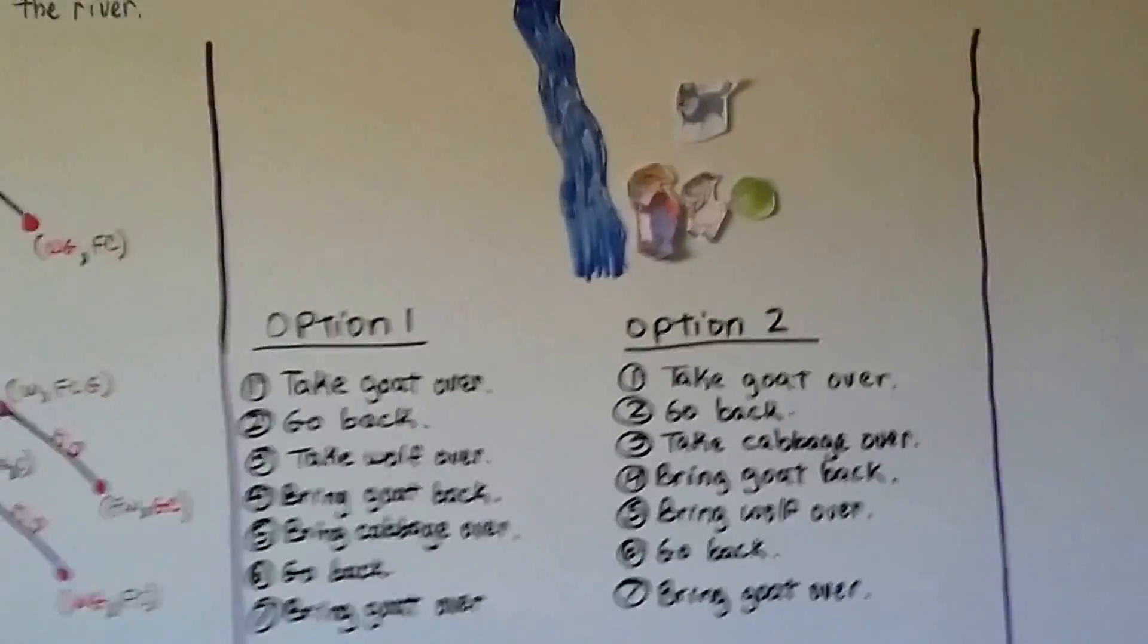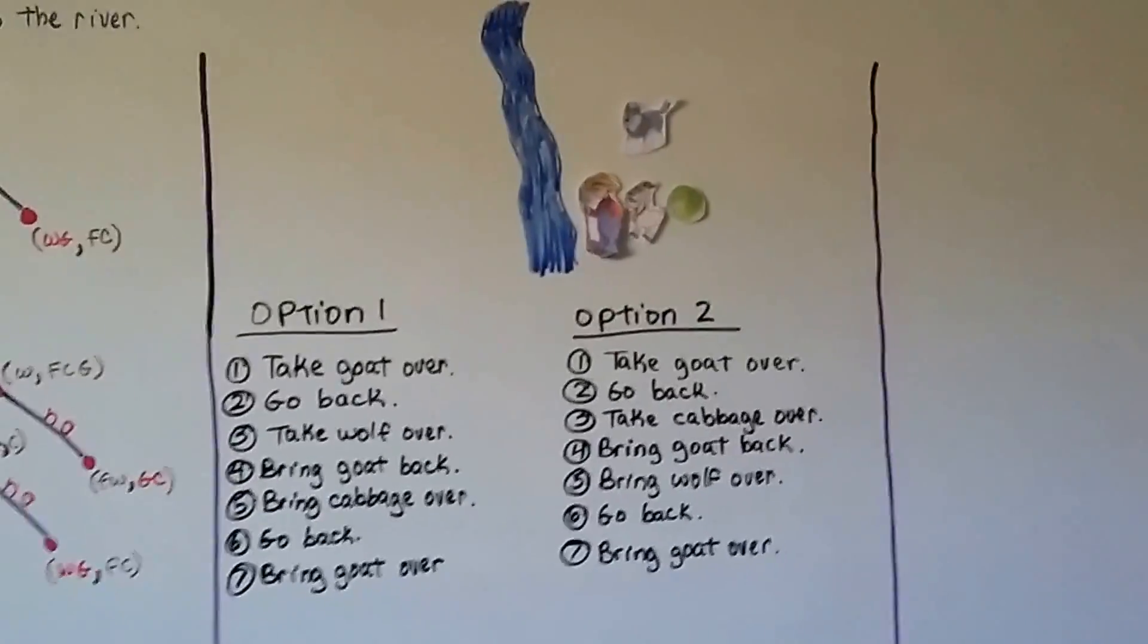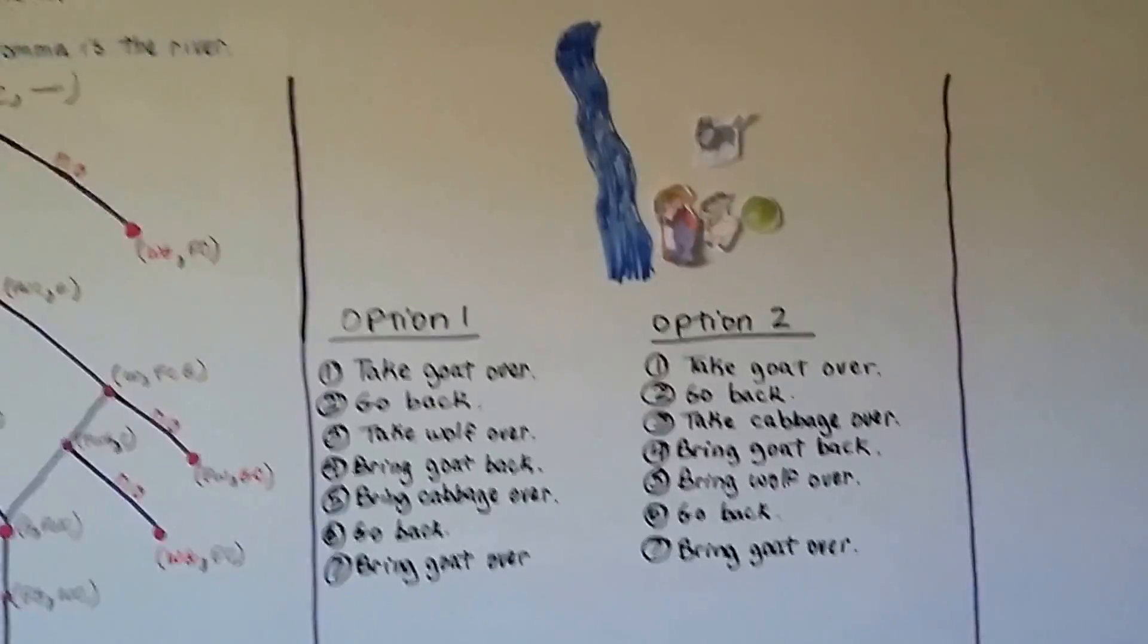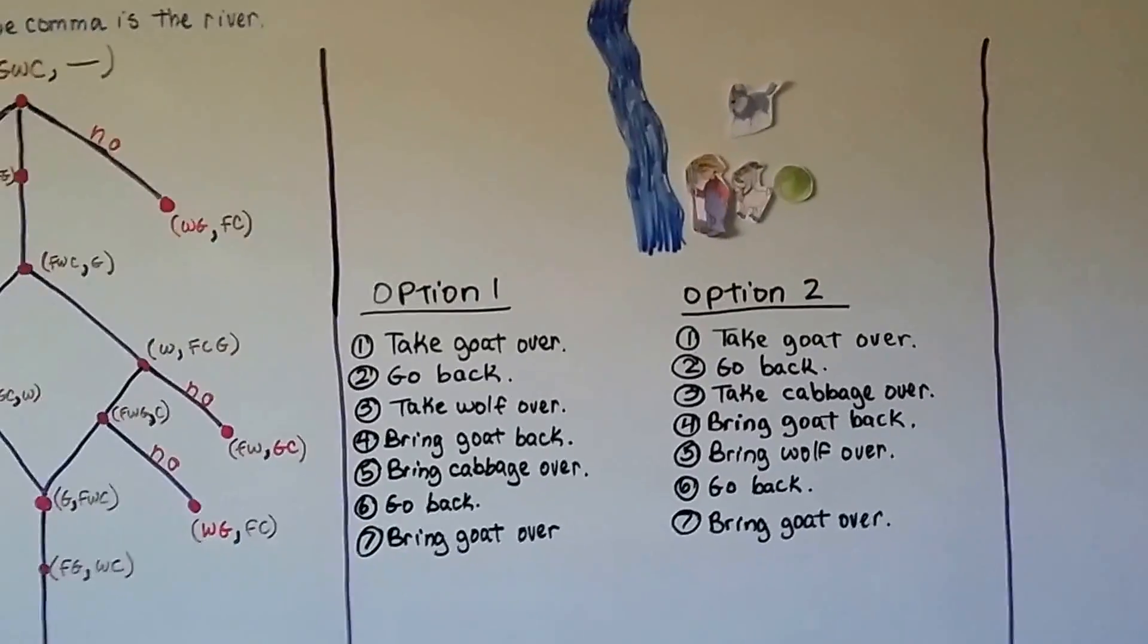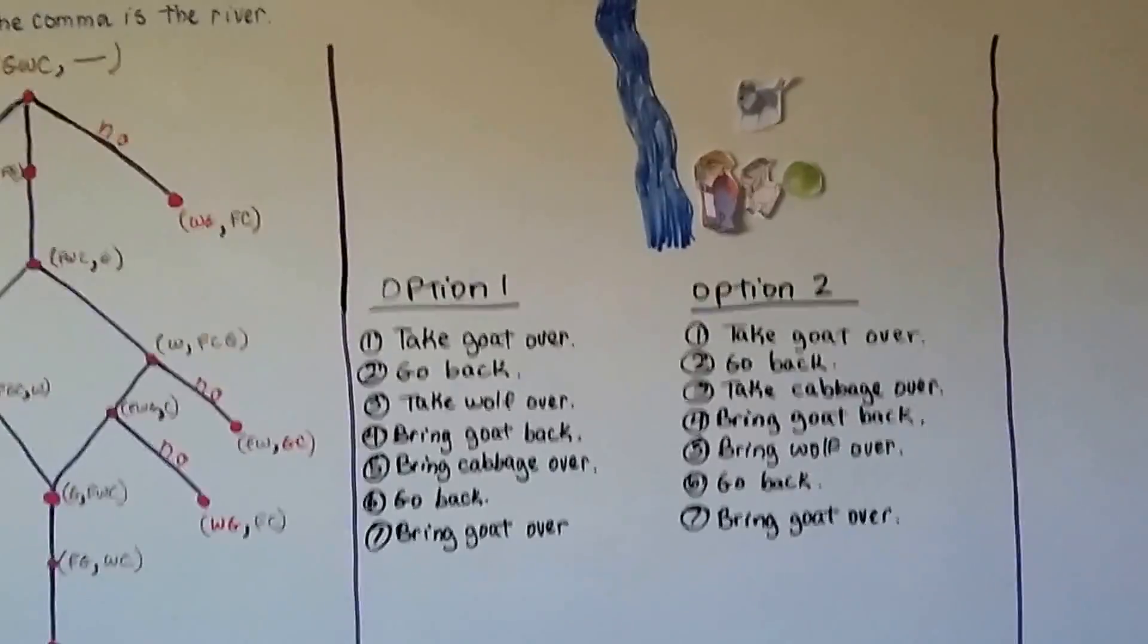So the trick to this was he had to bring the goat back and forth so that it wasn't left alone with the wolf or the cabbage. So all we're doing is using logic and deductive reasoning to solve these.